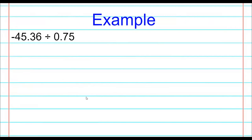Let's practice. We set up our problem with our dividend and our divisor. We can address the sign right now: we have a negative divided by a positive, so the answer is going to be negative. We know the answer is going to be negative because a negative divided by a positive equals a negative. Now we've got to find the number.